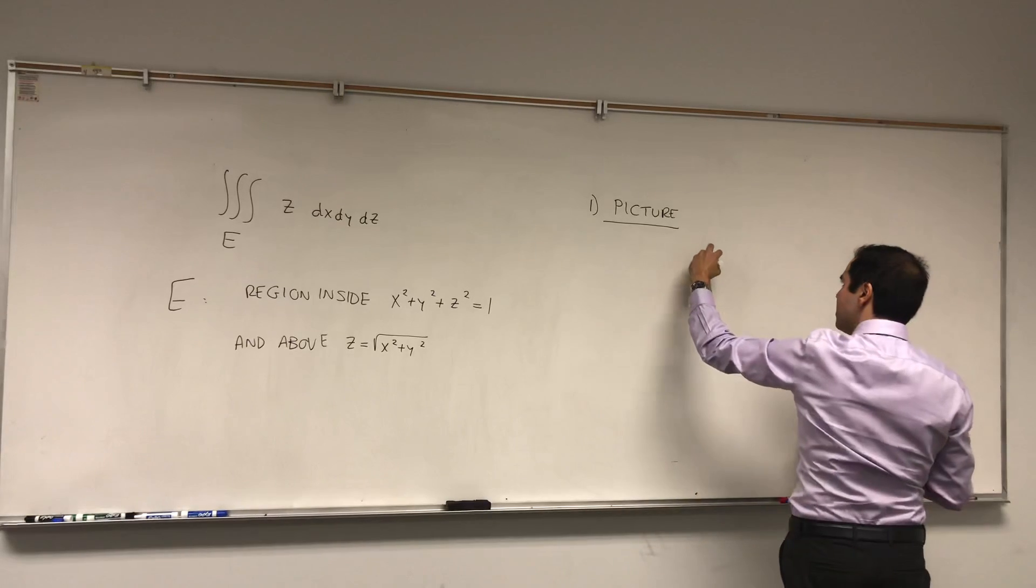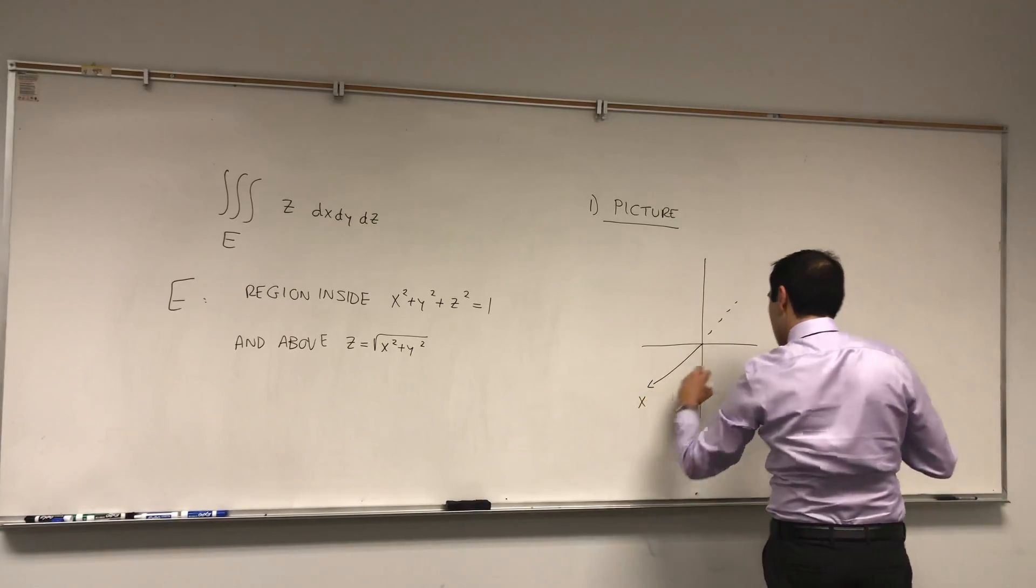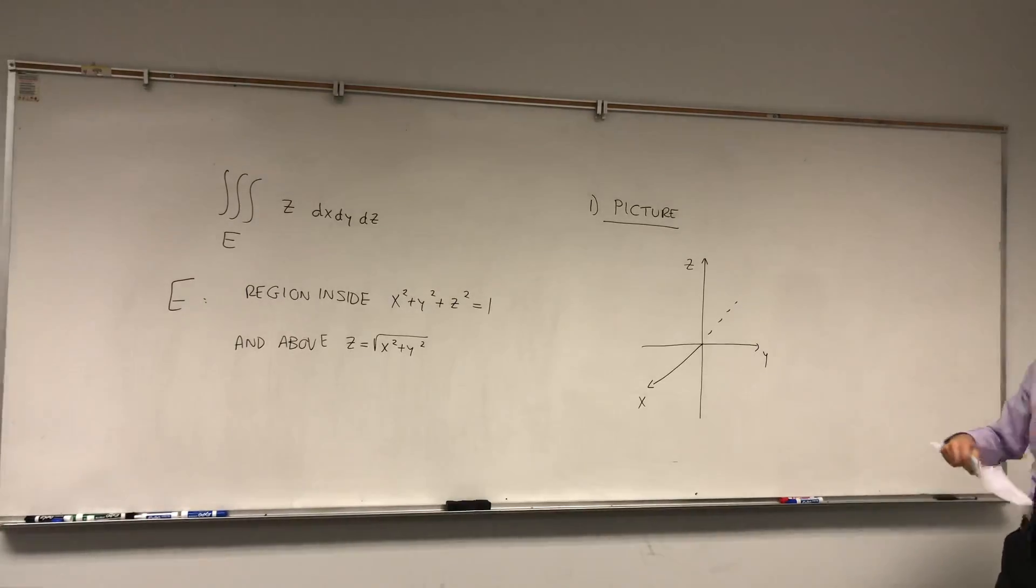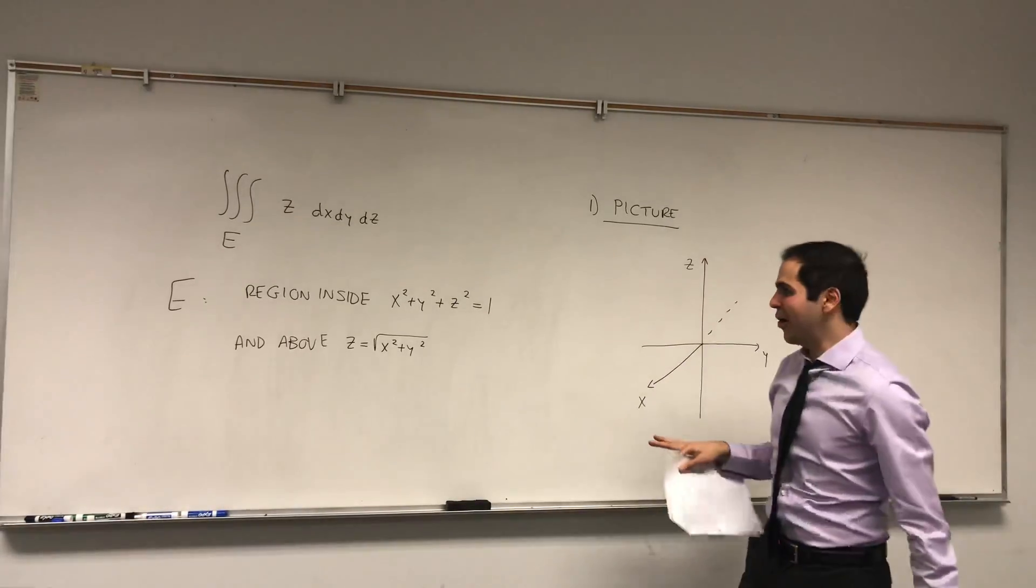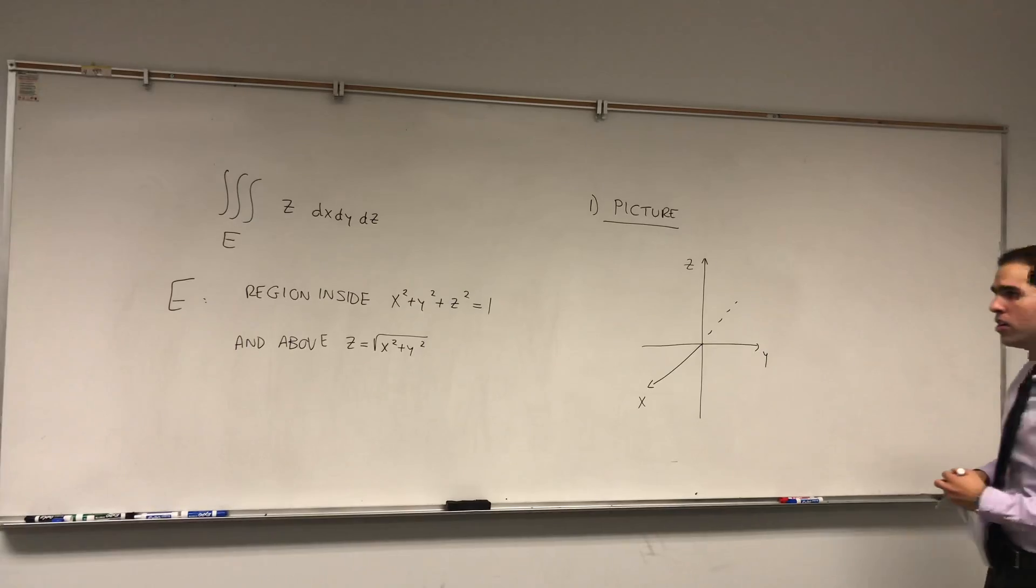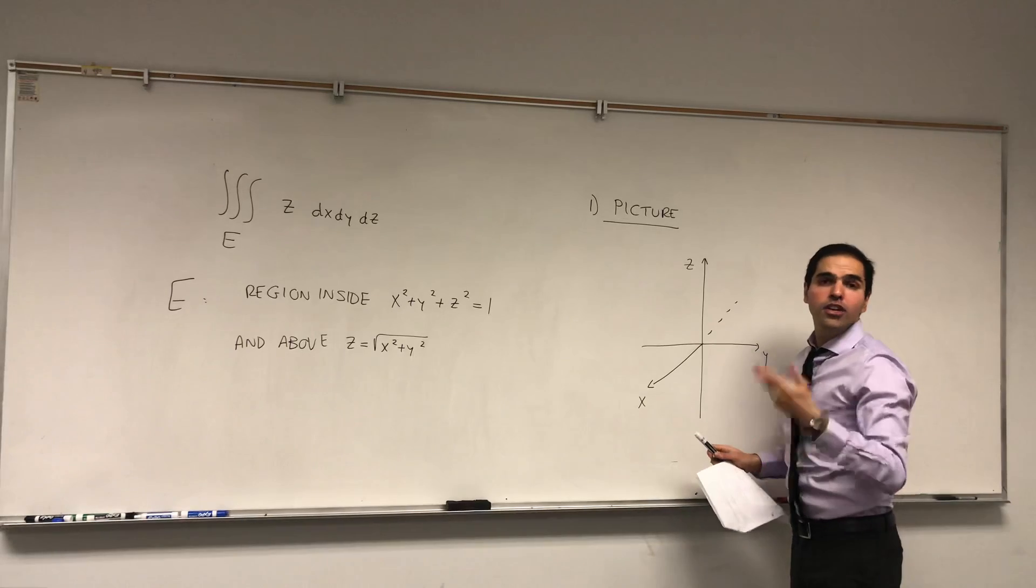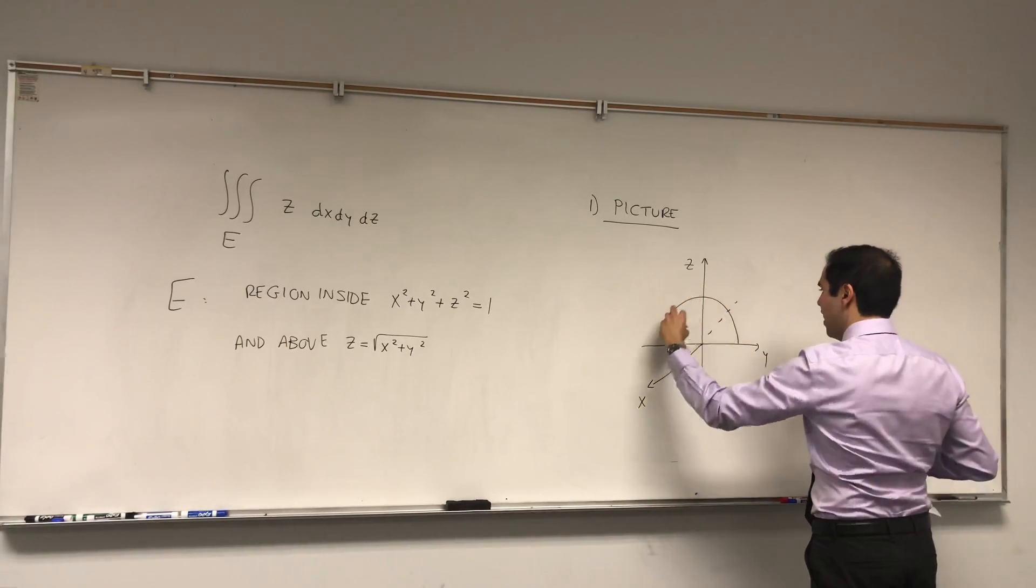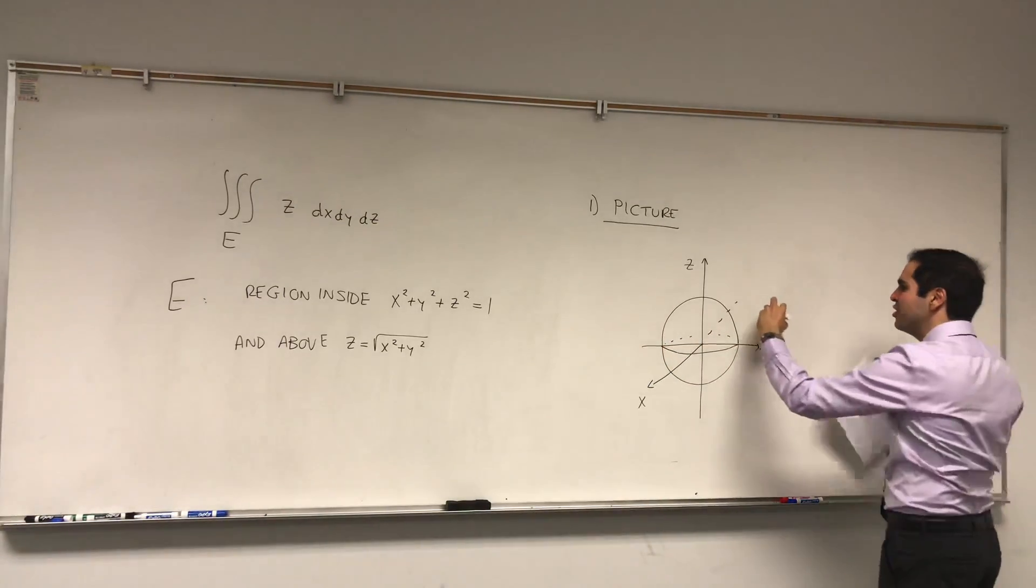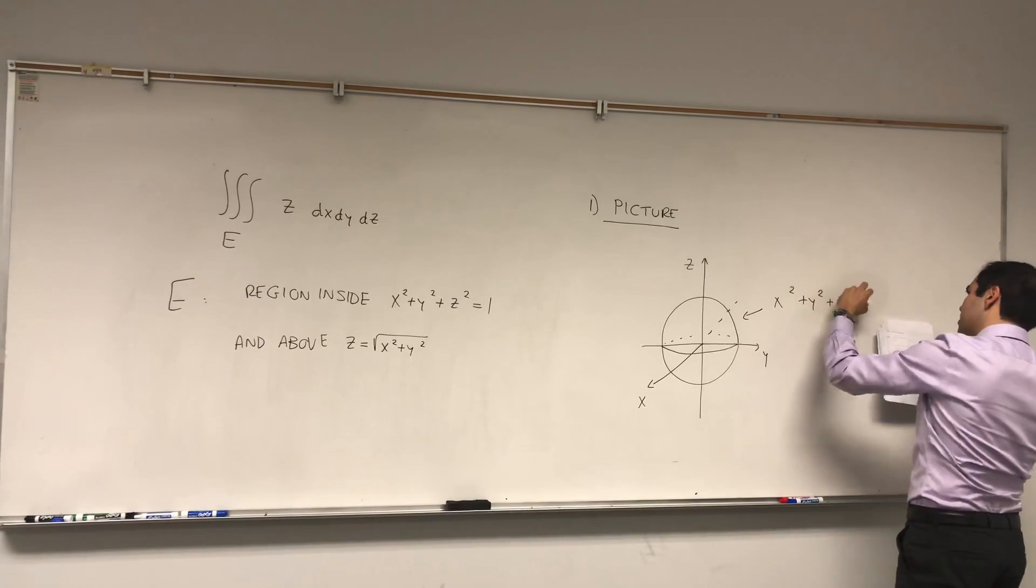So let's draw a picture. In this case, in the x, y, z plane, or x, y, z region. And first of all, let's figure out what all those objects are. So x squared plus y squared plus z squared equals 1. That's just a sphere of what radius? 1. If you had 4 here, you would say 2. And because you have a sphere, that's already an excellent indication that you have to use spherical coordinates.